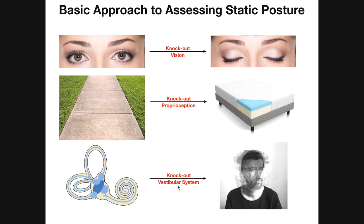Then we have the vestibular system, found in the inner ear. If you've taken anatomy and physiology, you've probably talked about this. The vestibular apparatus plays an important role in maintaining balance. Anytime there's a disturbance to the equilibrium of the head — if you bend your head to one direction or another — you throw it out of alignment and you're able to sense that. That is the vestibular system.